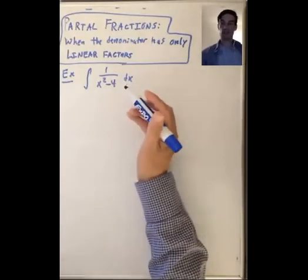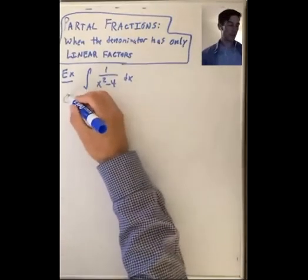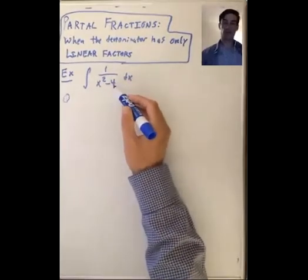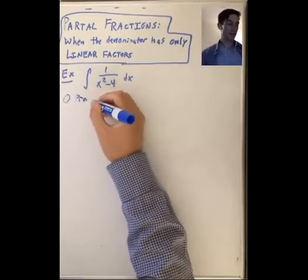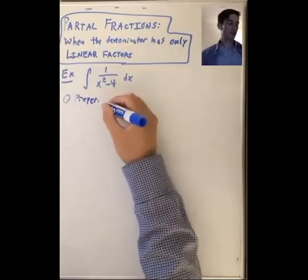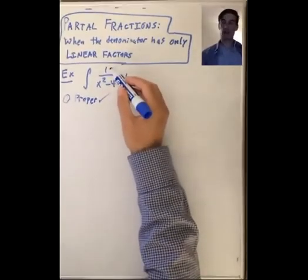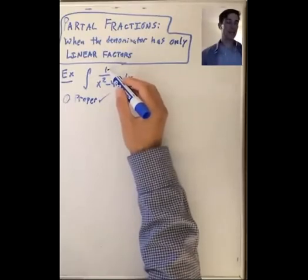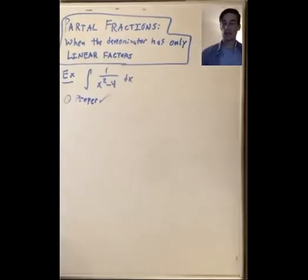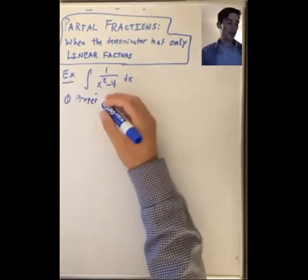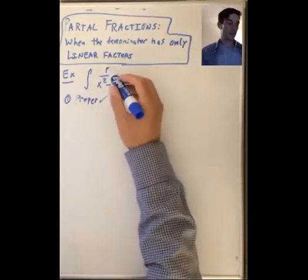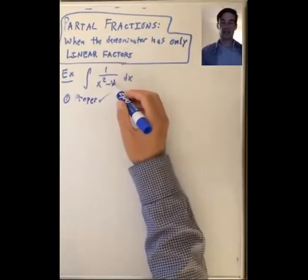Here let's do a similar example: the integral of 1 over x squared minus 4 dx. The first thing to do is check that your rational function is proper. In this case it is proper because the degree of the numerator 1 is 0 — this is a convention: when you have a constant function its degree as a polynomial in x is 0 — and the denominator has degree 2, so the degree of the numerator is less than the degree of the denominator.